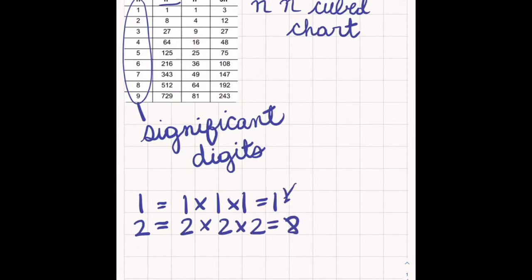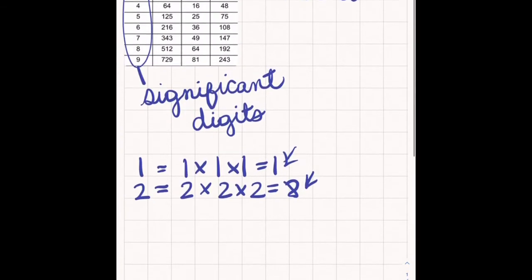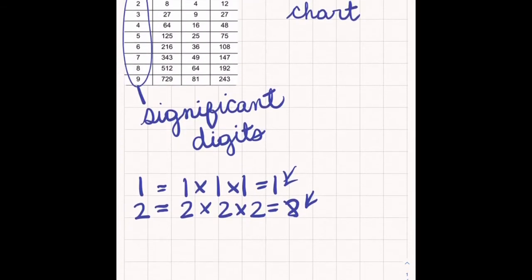So these are our answers of our significant digits. It's the cube of our significant digits. So the same would be 3 times 3 times 3 is 27. And 4 times 4 times 4 is 64. And 5 times 5 times 5 is 125. And 6 times 6 times 6 is 216.